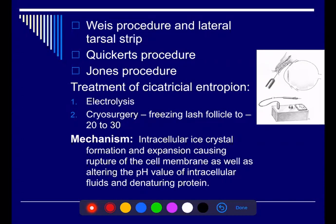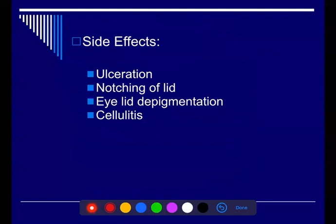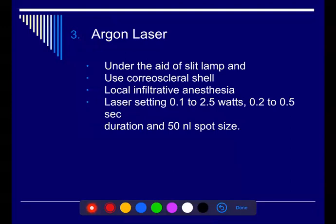With cryosurgery, we freeze the lash follicle: we perform a lid split at the gray line, separating the anterior and posterior lamella, then use cryosurgery to freeze the area of the lashes. The side effects of electrolysis and cryosurgery include disfigurement, maceration, notching of the eyelid, depigmentation, and madarosis. Argon laser can also be used as an alternative to electrolysis, applied by placing a corneal scleral shell on the patient's eye.